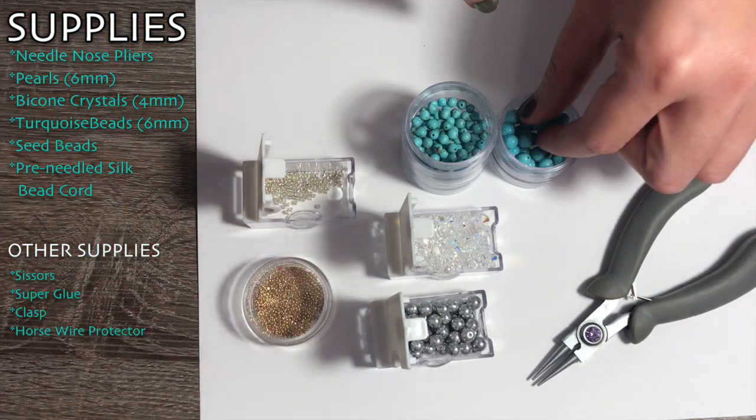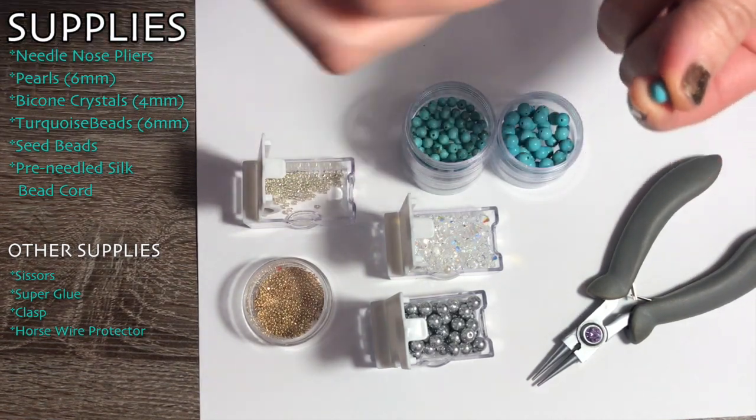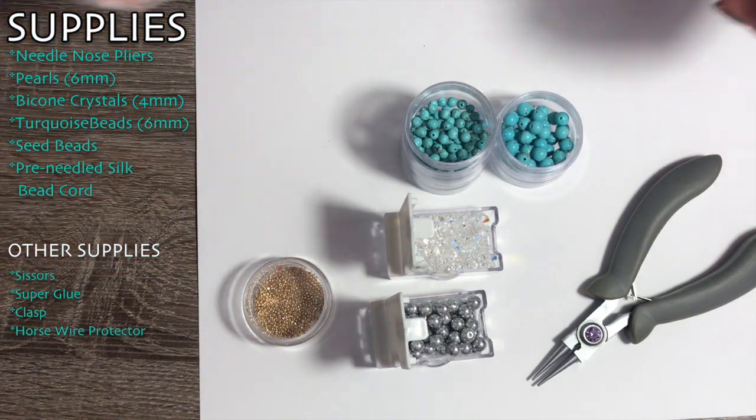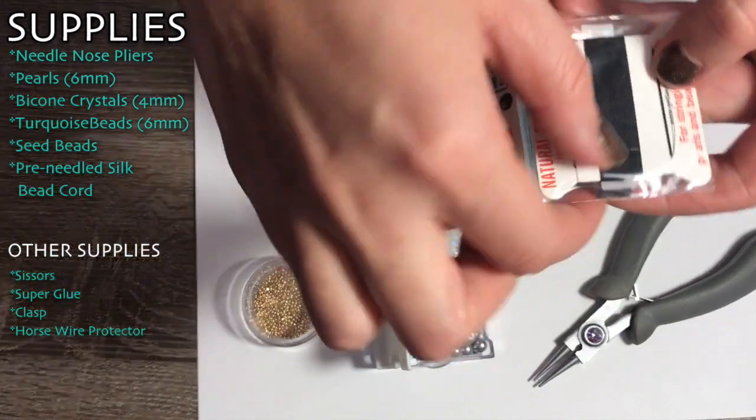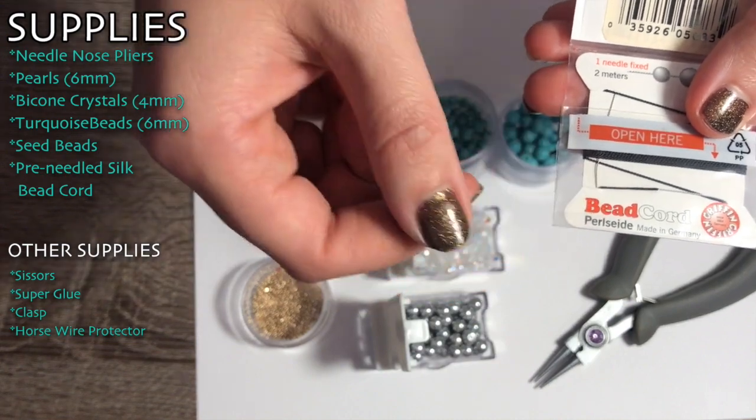What I'm going to use the seed beads for is on either side of these turquoise beads. If you have beads that have larger holes, you can put seed beads on both sides of the bead so that it doesn't pass through the knot. Last but not least, we've got some beading cord—this is silk, it comes pre-needled so that you don't have to worry about trying to stick the cord through the needle.